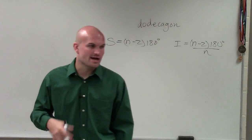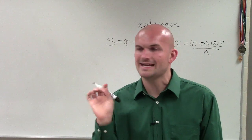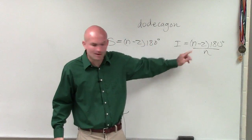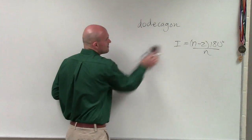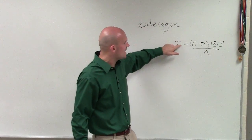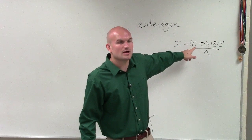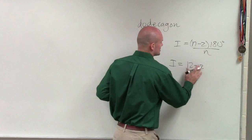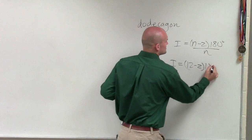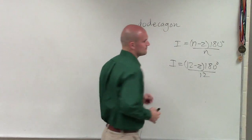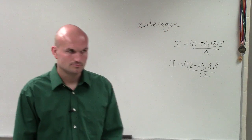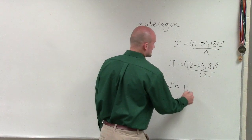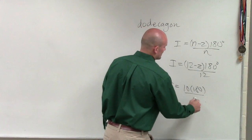Now, in this example, they say: you have a dodecagon, but find the measure of the individual angle. So therefore, since it's regular, I know I can use this equation. We want to determine what is this individual angle — what is this individual i. We know n represents the number of sides, which is 12. So therefore, I have i equals 12 minus 2 times 180 degrees divided by 12.